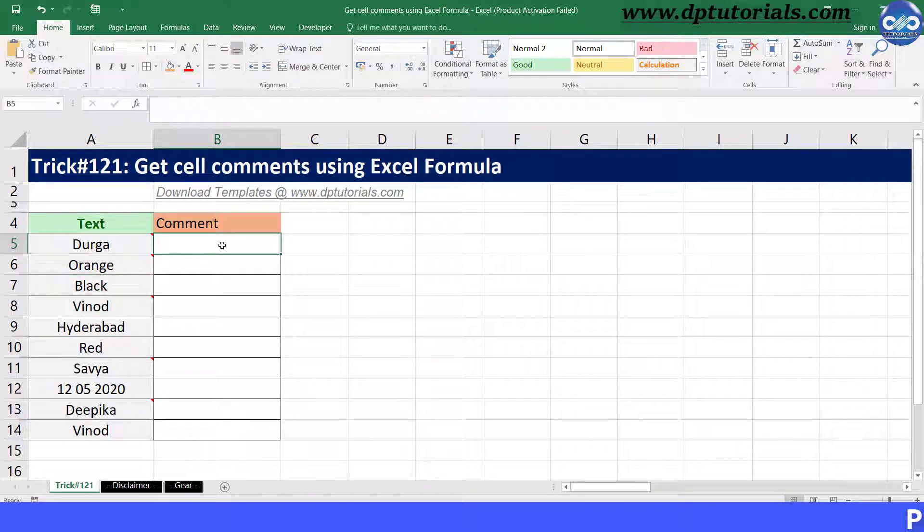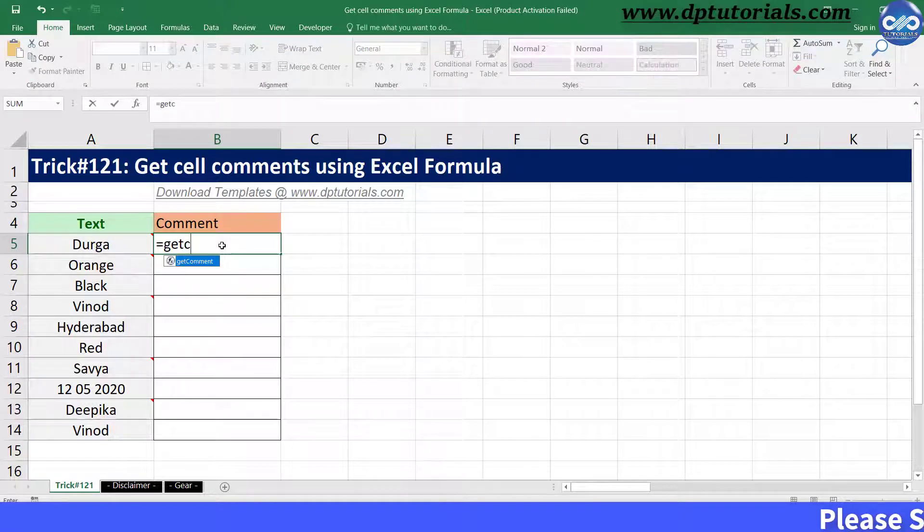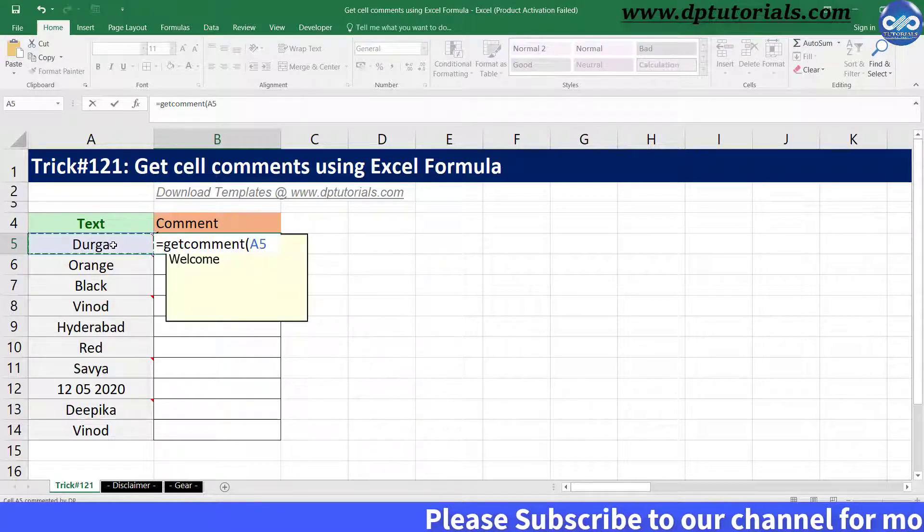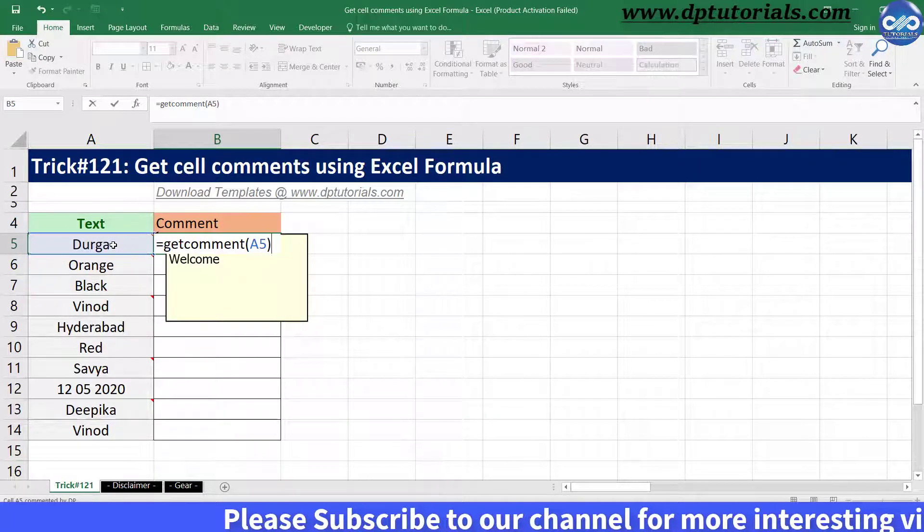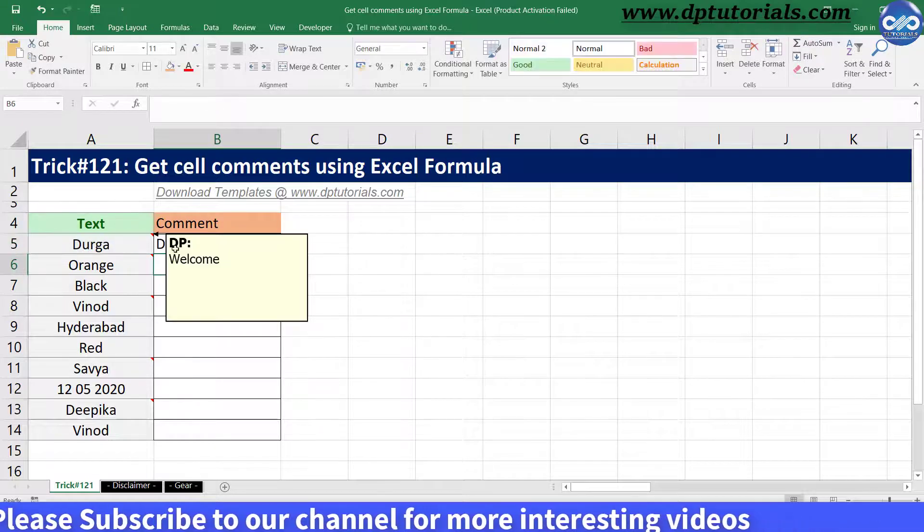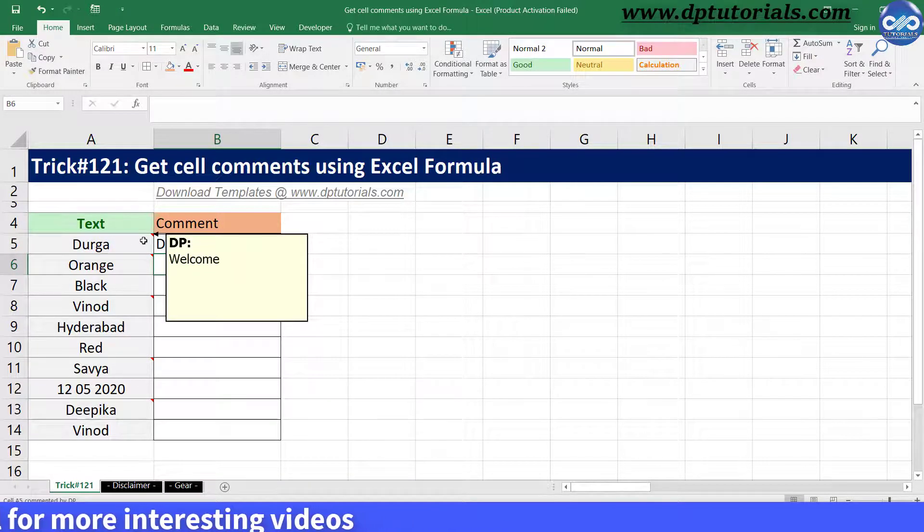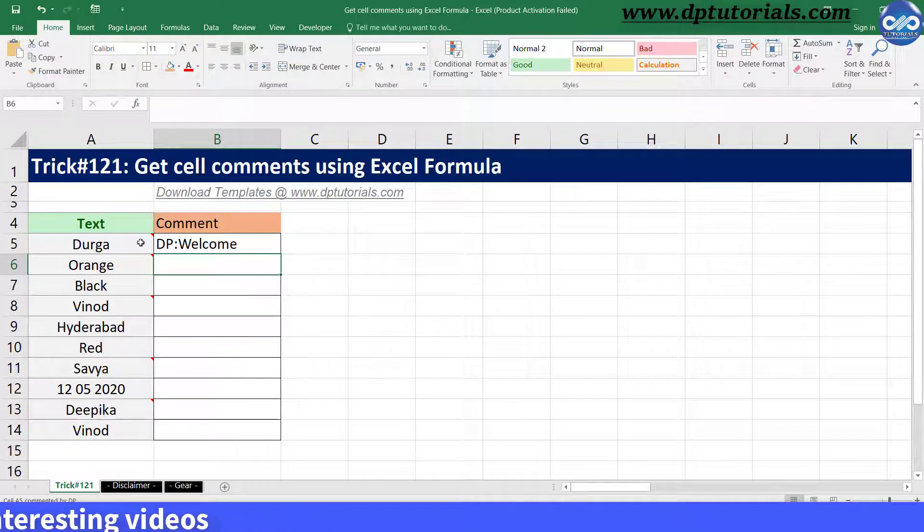Now in cell B5, type the formula as equals to getComment, open the bracket, and press enter. So you can see the text of the comment of cell A5 into cell B5 like this.